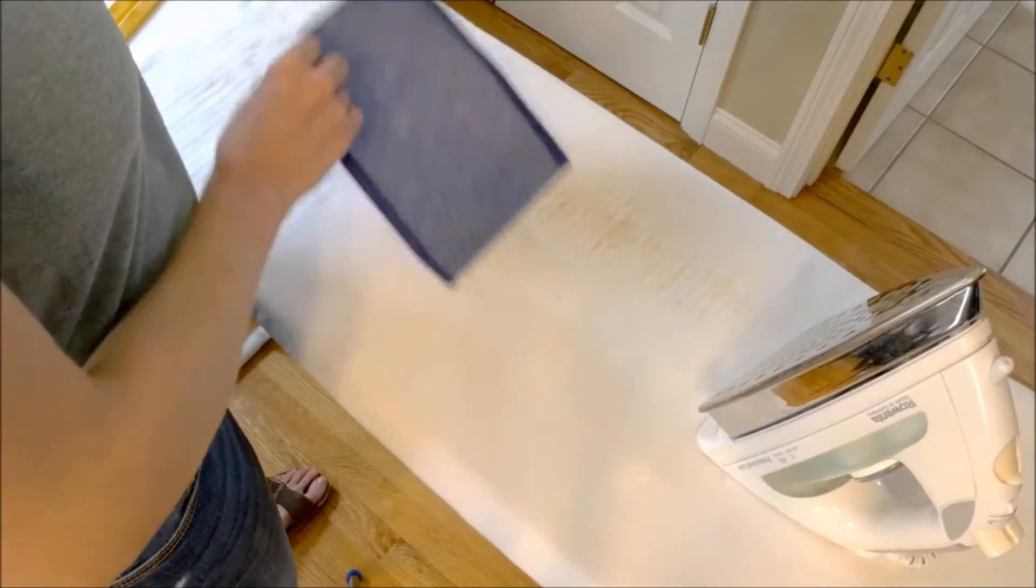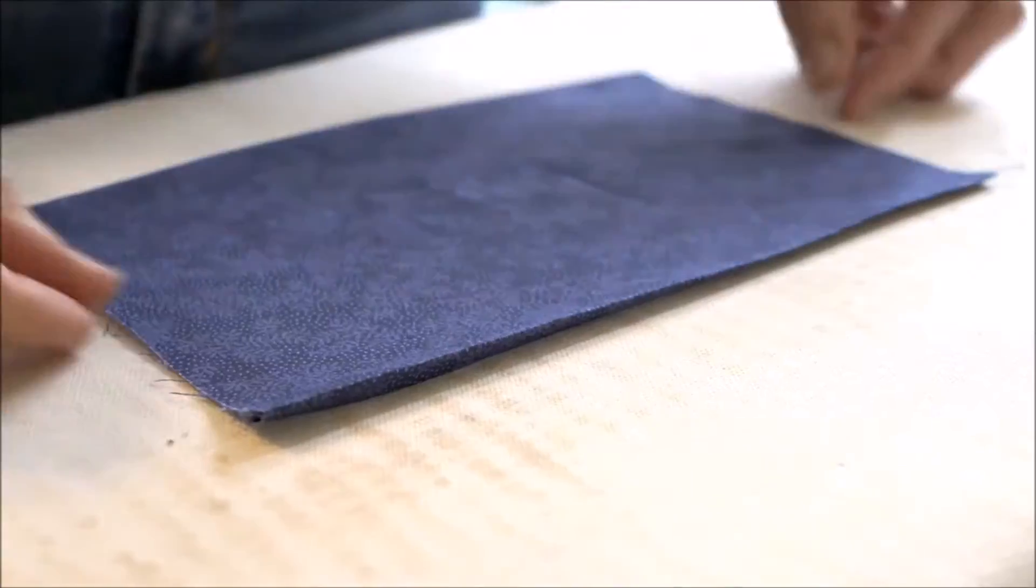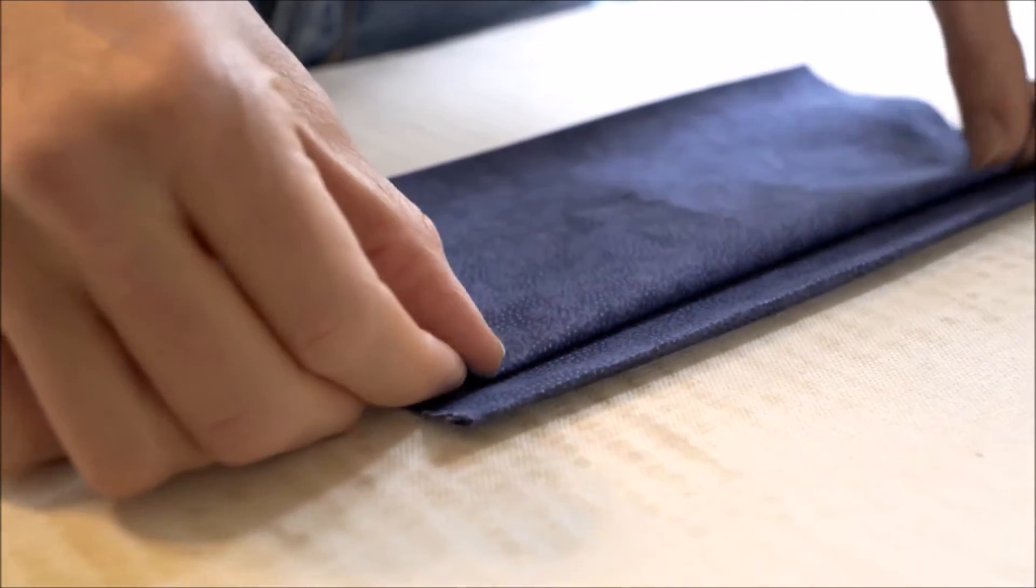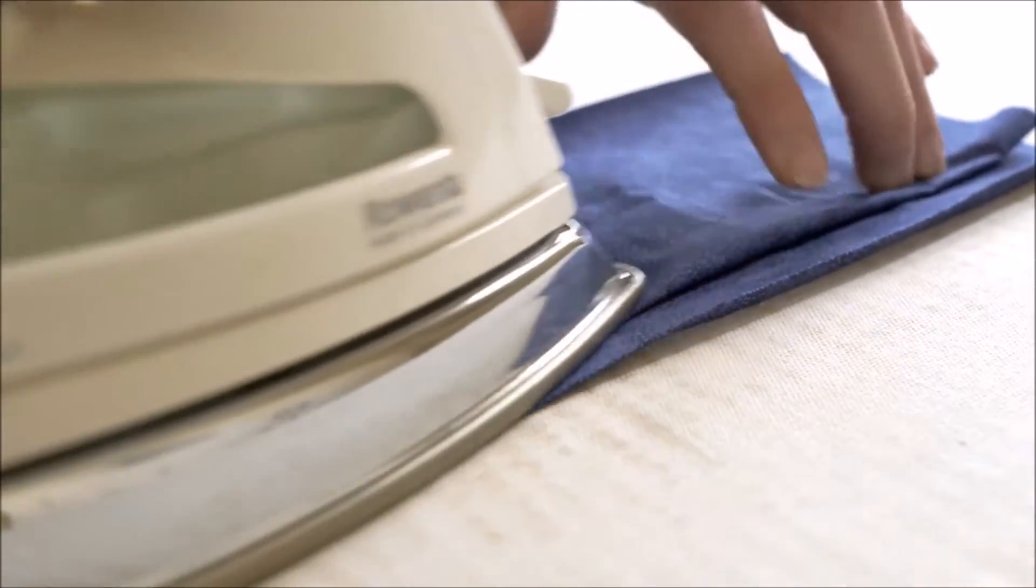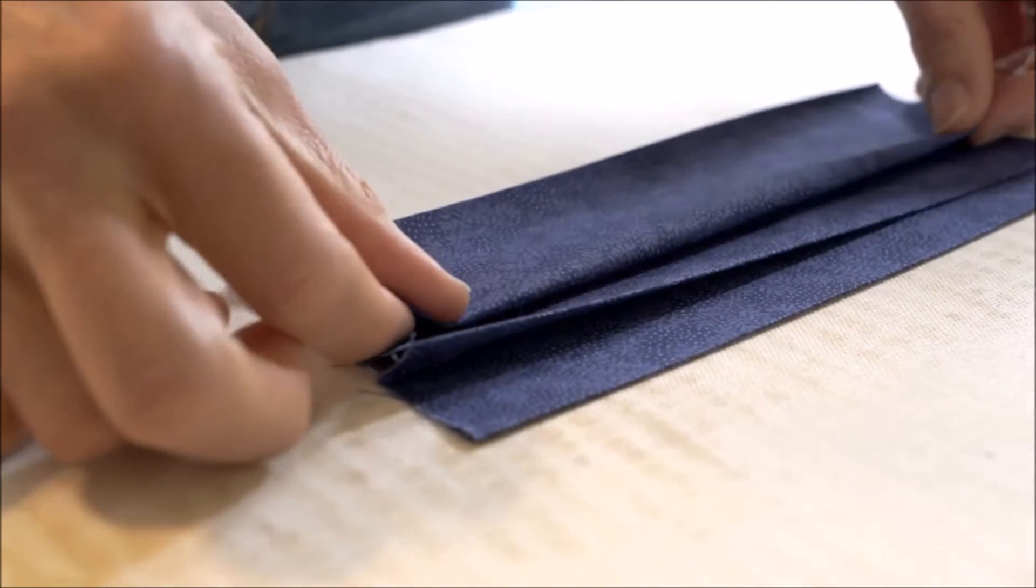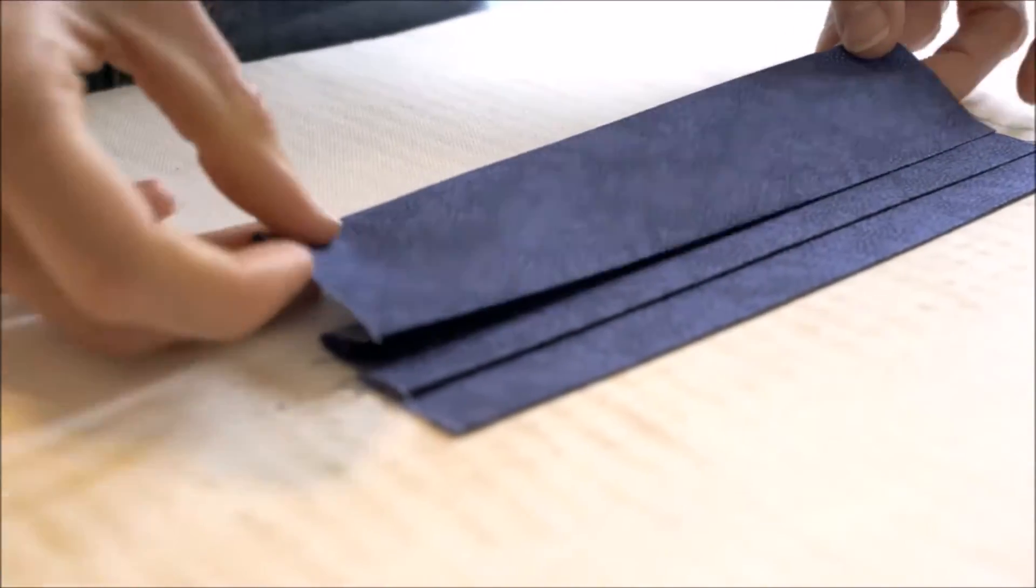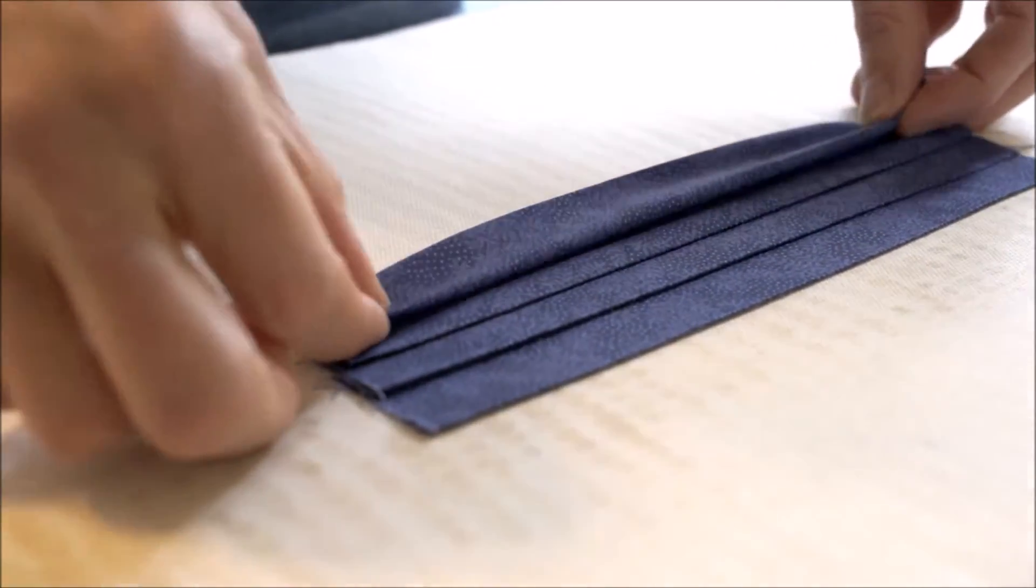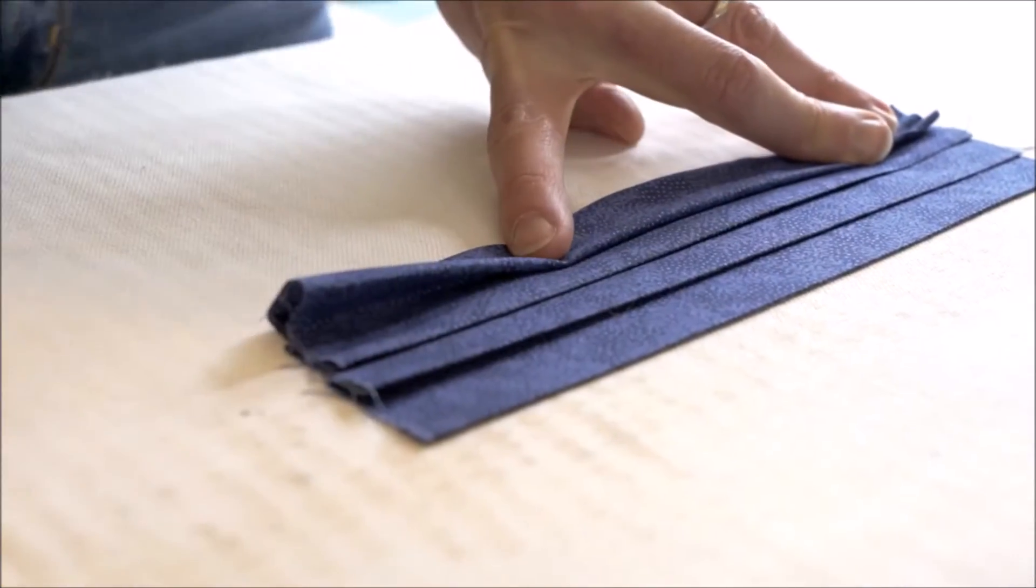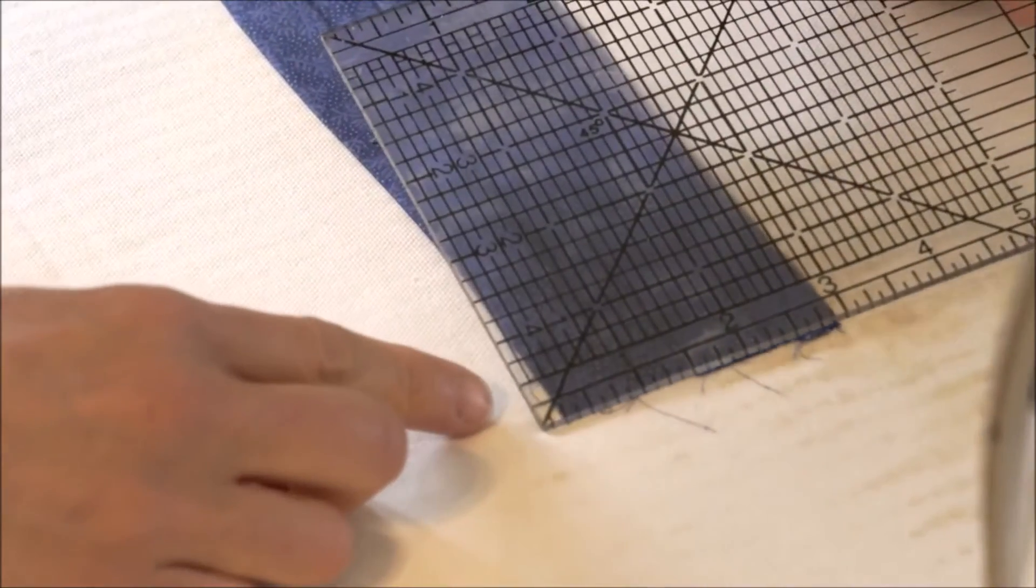Next we're going to form three pleats. Each pleat is about a quarter inch but doesn't need to be exact, so don't worry if yours aren't precise. The end goal is to have the pleated short side be between two and a half and three inches. That's what gives us the best fitted mask.